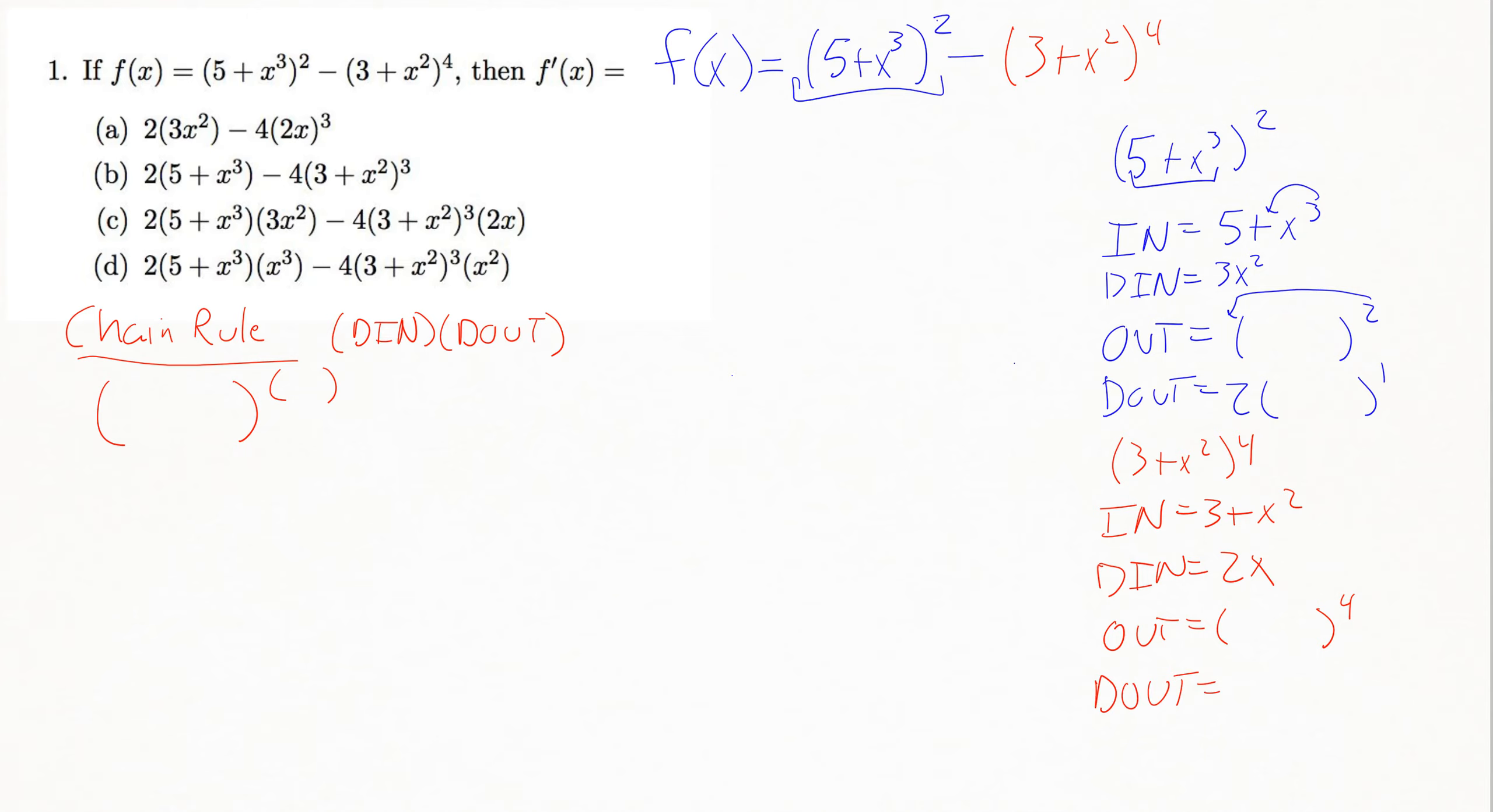Doing our derivative of the outside here, again, this is just a big power rule. You're bringing that 4 down in front, leaving alone all the stuff on the inside, and then subtracting 1 from the power.